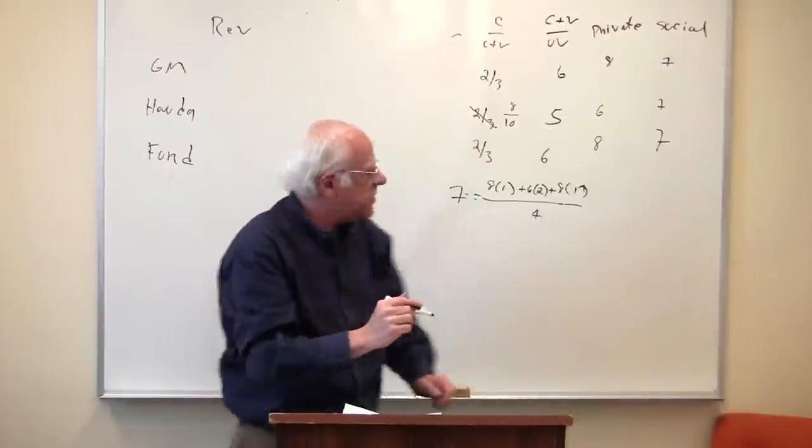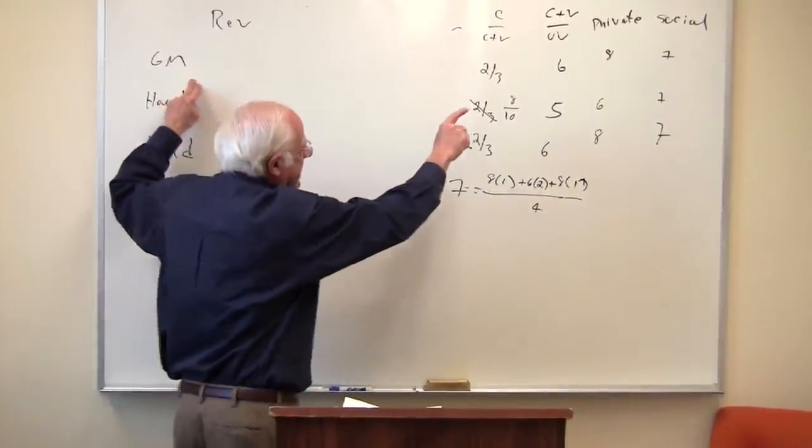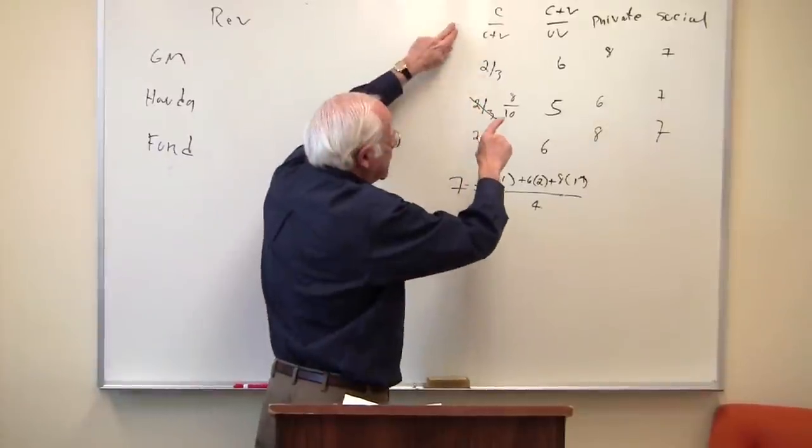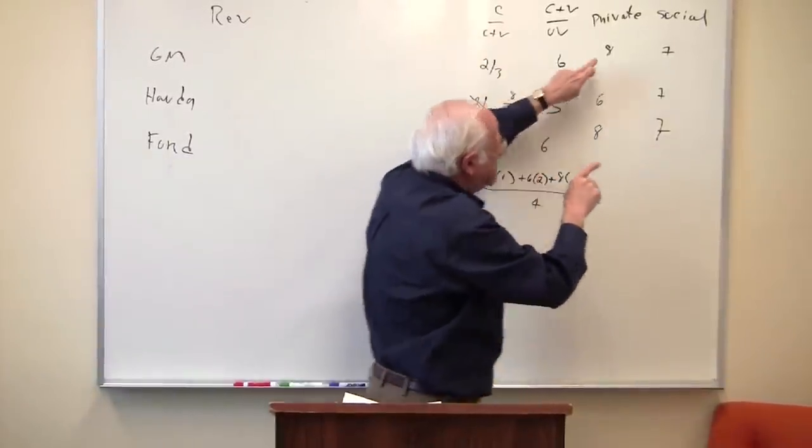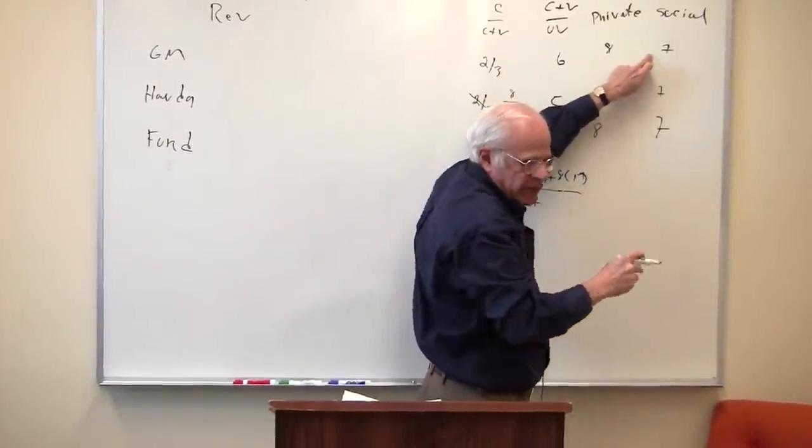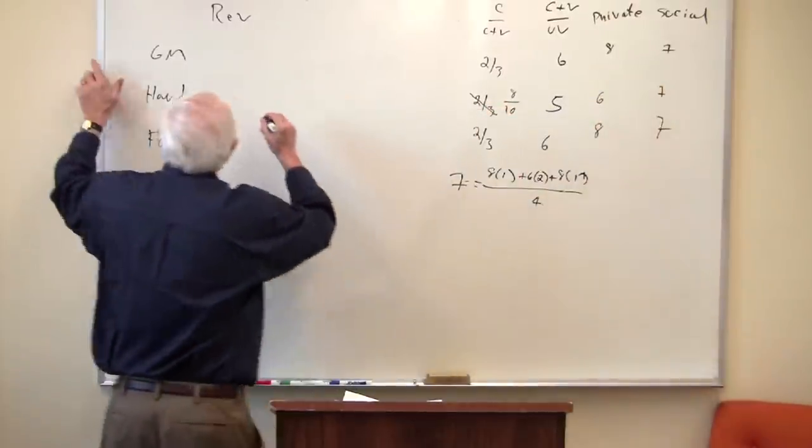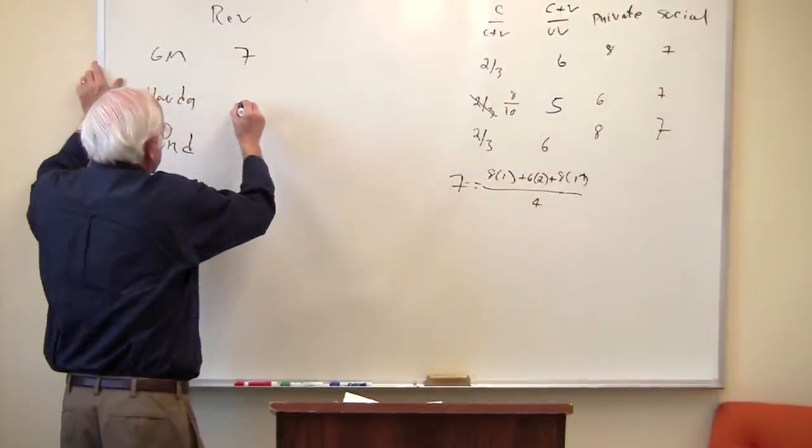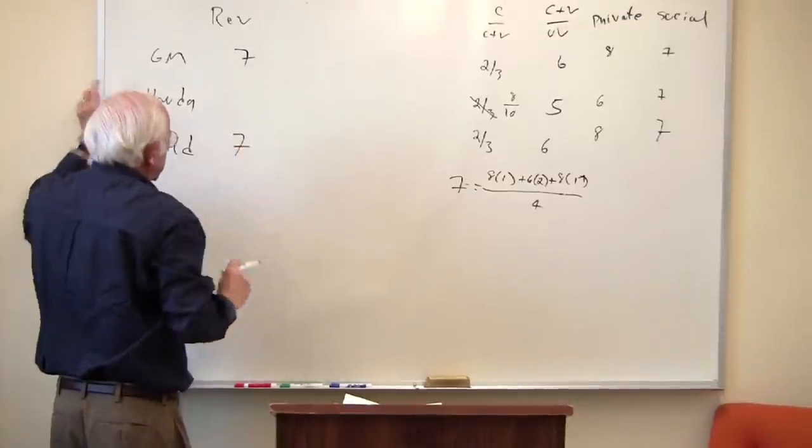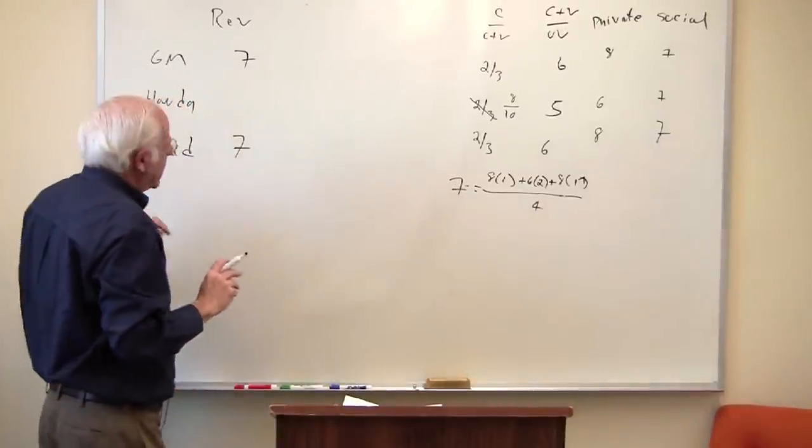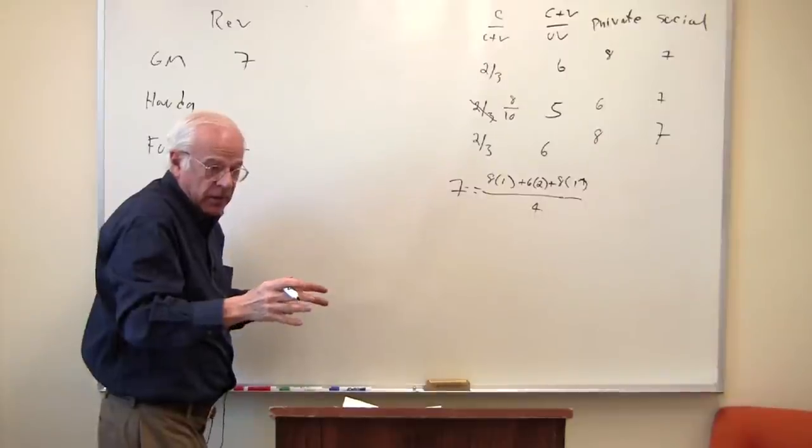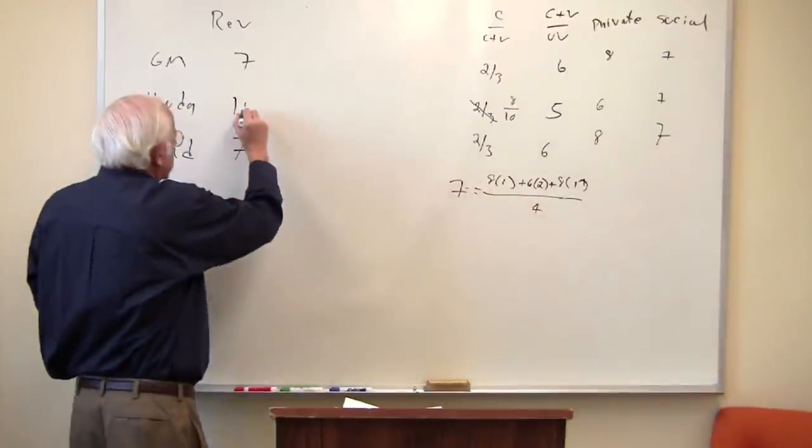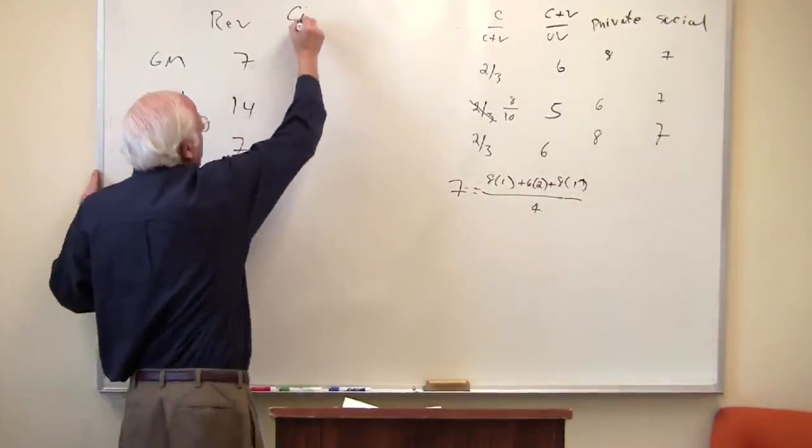So GM comes to market, it sells its one unit at what price? Not the private cost, it sells at $7, it has no choice. So it gets a revenue of $7. Same for Ford. Honda sells at $7, it sells two cars, so its revenue is $14. Here's the cost.